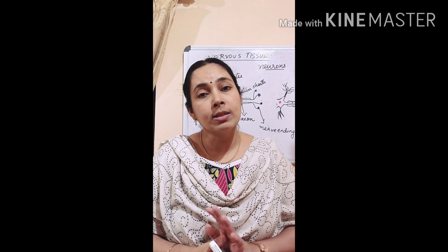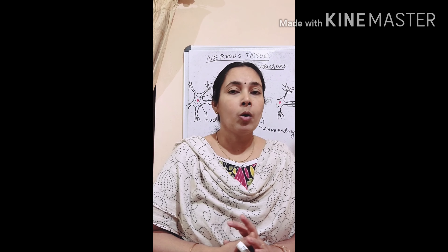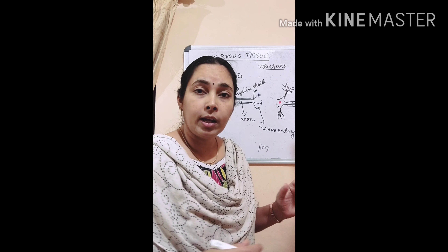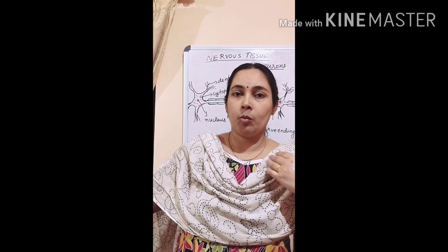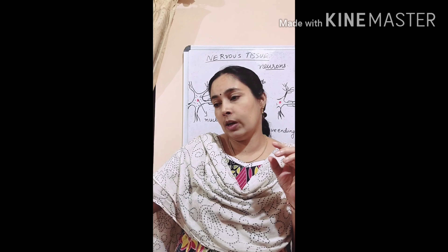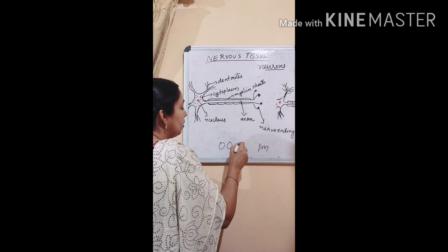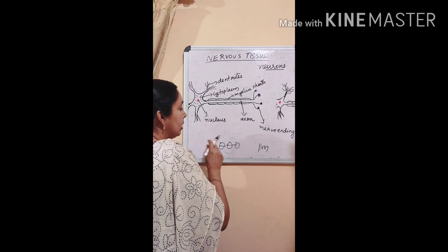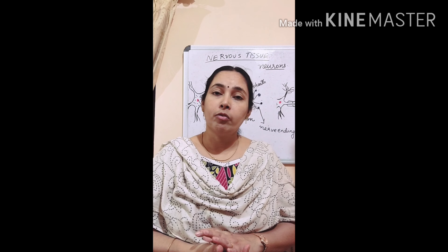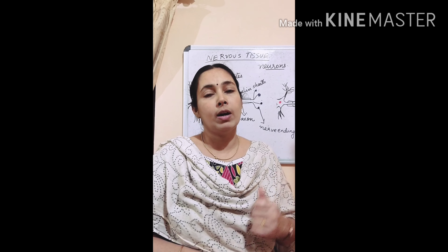Nervous tissue — the neuron — is the longest cell in our body, about 1 meter long. Its long structure helps it to carry messages very fast throughout our body. If it were very small or a different shape, it would be difficult to carry messages, but being very long it can carry messages very fast. So its structure helps it perform its function.